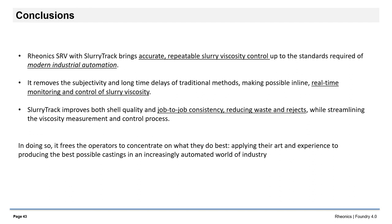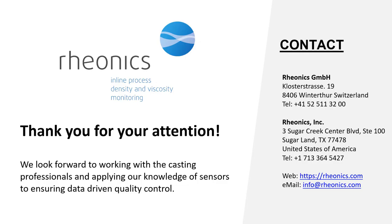Rhionics SRV with Slurry Track brings accurate, repeatable slurry viscosity control up to the standards required of modern industrial automation. It removes the subjectivity and long-time delays of traditional methods, making possible inline, real-time monitoring and control of slurry viscosity. Slurry Track improves both shell quality and job-to-job consistency, reducing waste and rejects, while streamlining the viscosity measurement and control process. In doing so, it frees the operators to concentrate on what they do best, applying their art and experience to producing the best possible castings in an increasingly automated world of industry. Thank you for your attention. We look forward to working with casting professionals and applying our knowledge of sensors to ensuring data-driven quality control.